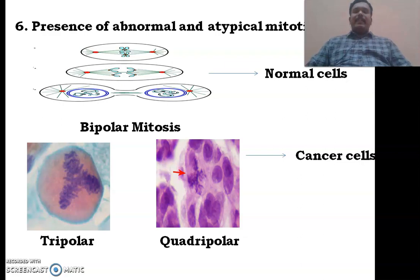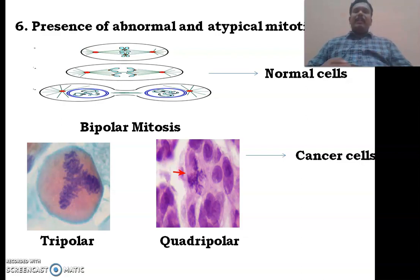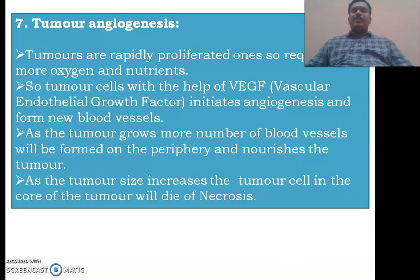The presence of abnormal and atypical mitotic figures is one of the most important characteristics observed in tumor cells. Generally, whenever a cell undergoes mitosis, we observe bipolar spindles — from one cell, two cells are formed. But as cancer cells are very aggressive and want to grow very fast, they will form tripolar spindles, meaning from one cell they try to divide into three. We can also observe quadripolar spindles in cancer cells.